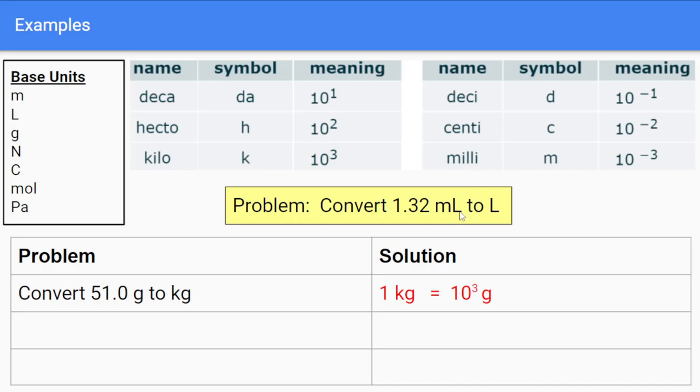Again, you'll take the base unit and write it next to both of these columns. So, one milliliter is equal to 10 to the negative third liters. In other words, to convert from 1.32 milliliters to liters, one milliliter is equal to 10 to the negative third liters.